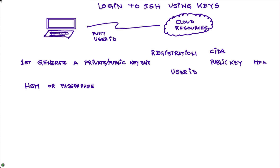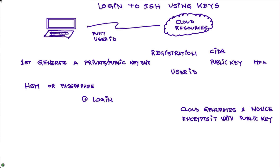You provide that user ID and public key at registration. When you are going to log in, if you are initiating the session from a browser, you need to ensure a good SSL session to mitigate man-in-the-middle attacks. When you provide that user ID, the cloud entity generates what is called a NONCE — a Number Used Once. It's a large, complex pseudo-random number. The cloud then encrypts that NONCE using the public key you provided at registration time and sends it to the entity wanting to initiate the secure session.